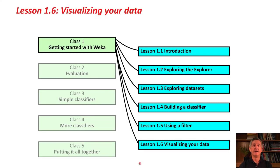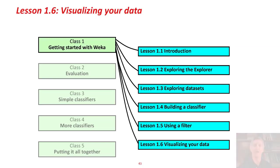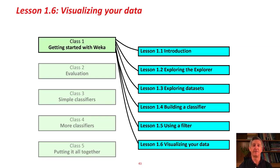Hi. One of the constantly recurring themes in this course is the necessity to get close to your data — look at it in every possible way. In this last lesson of the first class, we're going to look at visualizing your data. We're going to use the Visualize panel. I'm going to open the IRIS dataset — I'm using it because it has four numeric attributes: sepal length, sepal width, petal length, petal width, and the class of three kinds of iris flower: iris setosa, iris versicolor, and iris virginica.